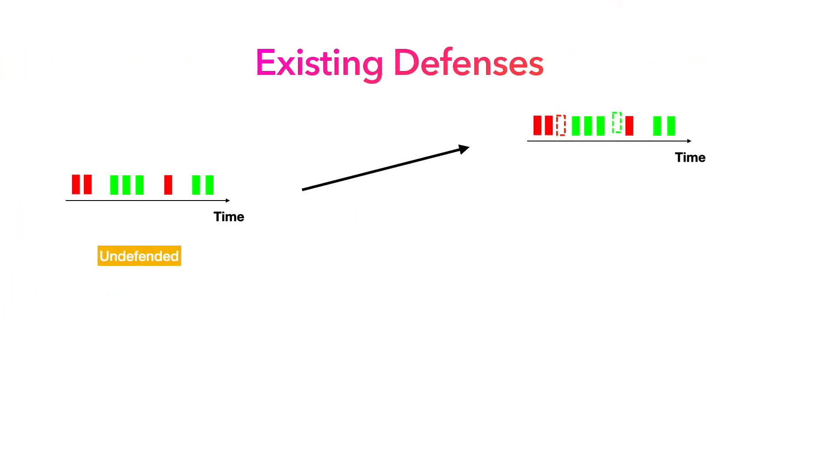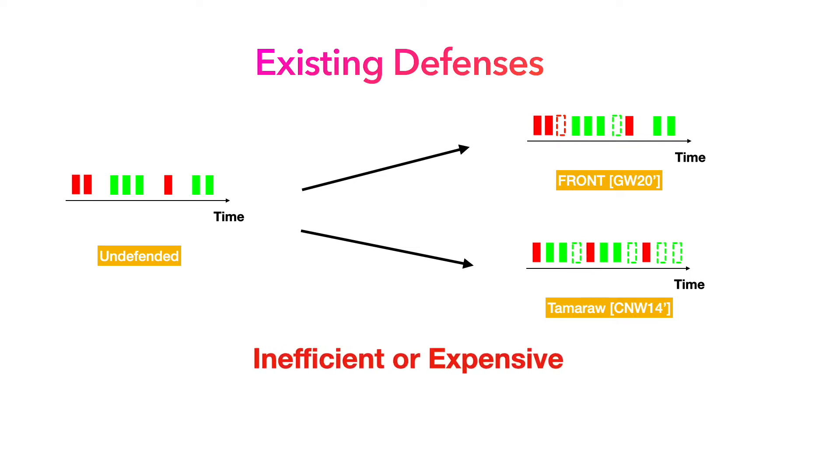The existing defenses by randomly adding dummy packets or sending packets in a constant flow are shown to be either inefficient or too expensive to afford.